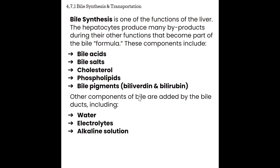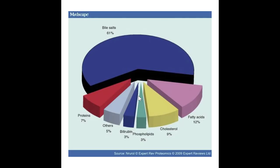Once those products enter the bile canaliculi from hepatocytes, they travel through the ducts, which add more components to the formula: water, electrolytes, and an alkaline solution. Bile is very basic — it has a bitter taste. If you've ever had bilious vomiting, you've probably tasted bile before. Most of what creates bile is the bile salts, which help break down the fats we ingest.